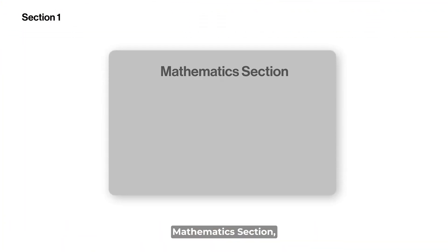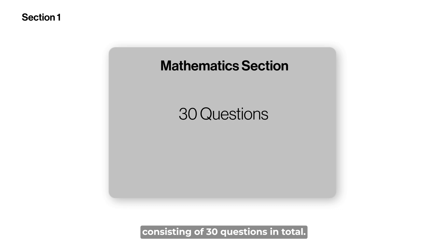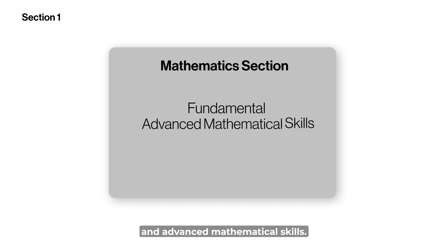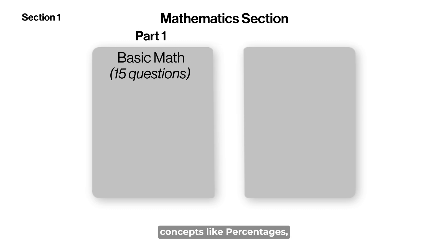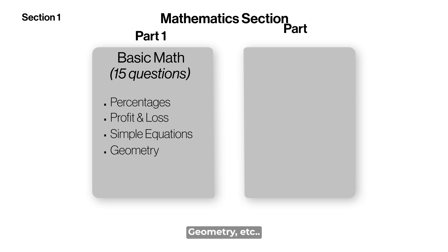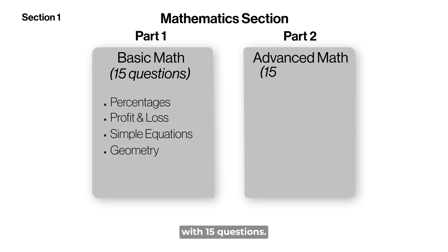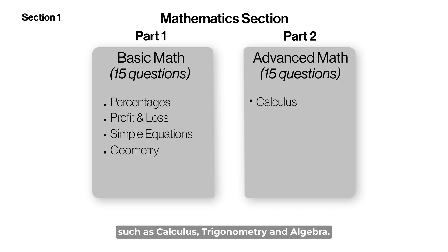The first section is Mathematics, consisting of 30 questions in total. This section evaluates both fundamental and advanced mathematical skills and is divided into two parts. Part 1 is Basic Math with 15 questions, testing class-level concepts like percentages, profit and loss, simple equations, and geometry. Part 2 is Advanced Math with 15 questions, focusing on class 11th and 12th topics such as calculus, trigonometry, and algebra.